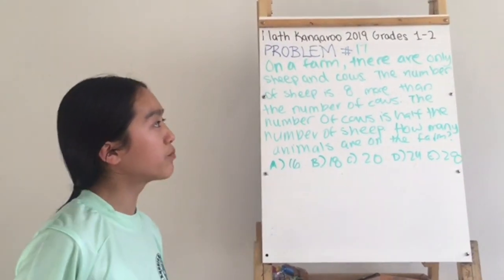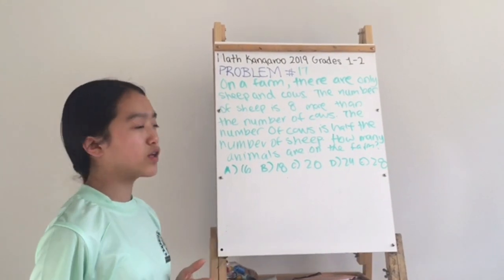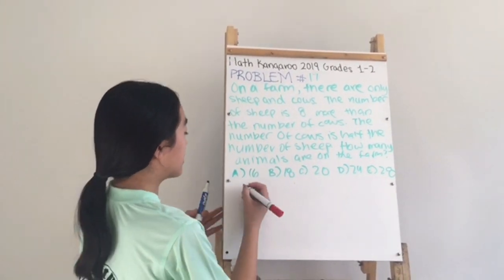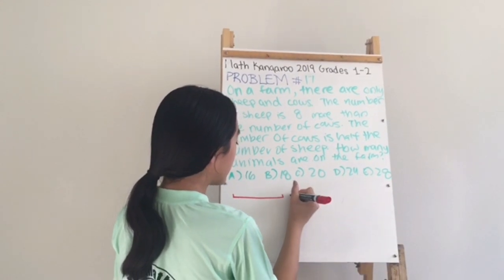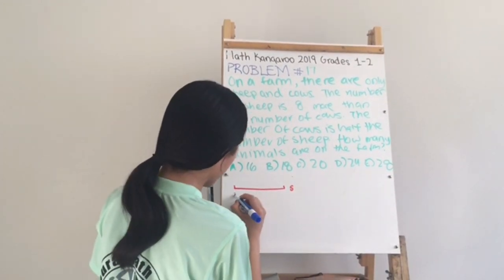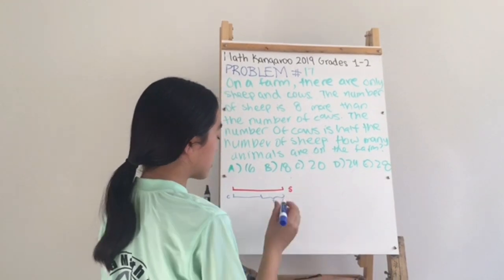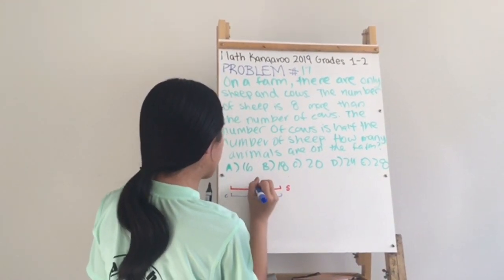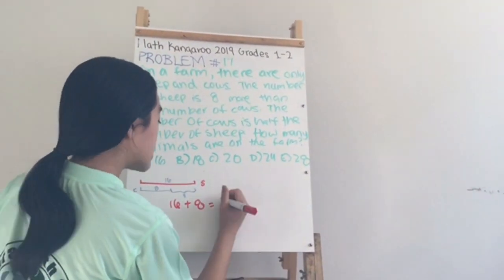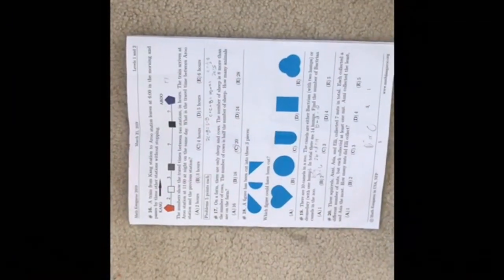Problem number seventeen: on a farm there are only sheep and cows. The number of sheep is 8 more than the number of cows, and the number of cows is half the number of sheep. Drawing a diagram, the cows total 8 and the sheep total 16, so 16 plus 8 equals 24 animals total — the answer is D.